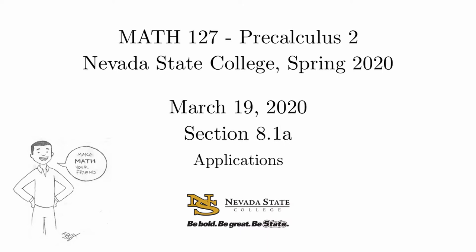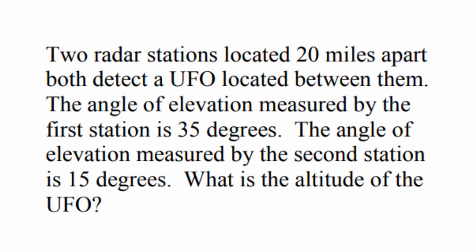We're going to look at one example of this. The book actually has a picture. We're going to start off without the picture and just see if we can make sense of the words first. Two radar stations located 20 miles apart both detect a UFO located between them. The angle of elevation measured by the first station is 35 degrees. The angle of elevation measured by the second station is 15 degrees. What is the altitude of the UFO?